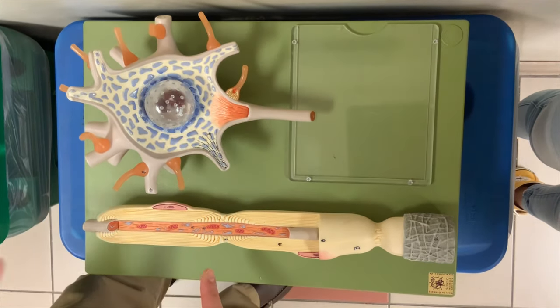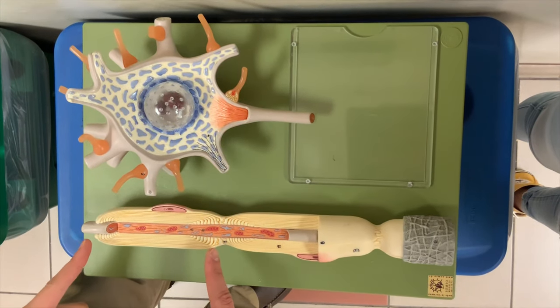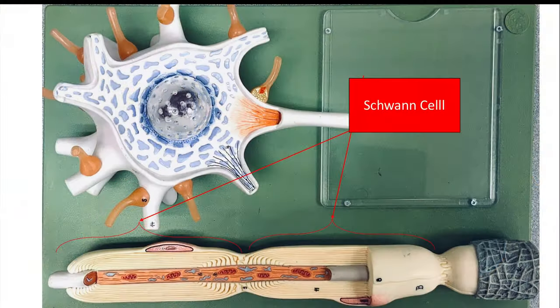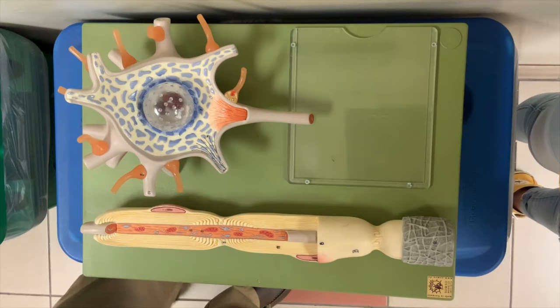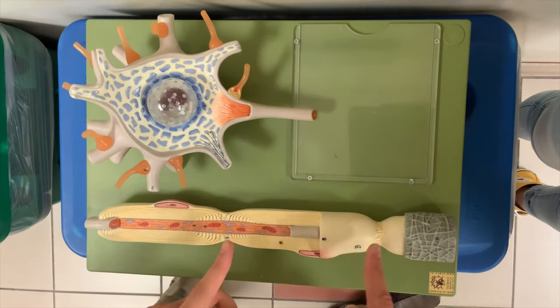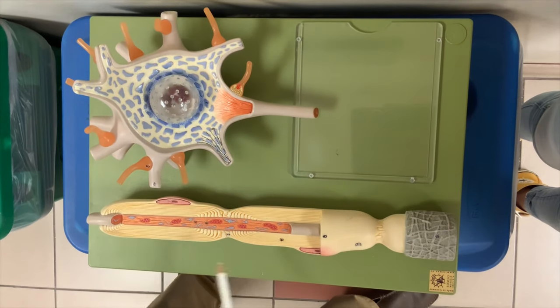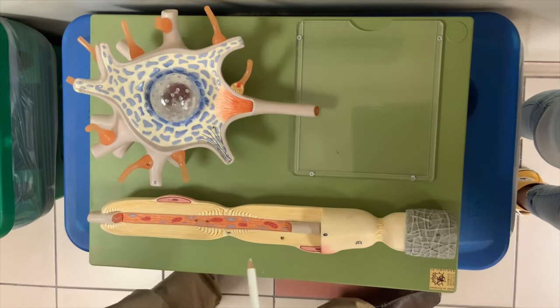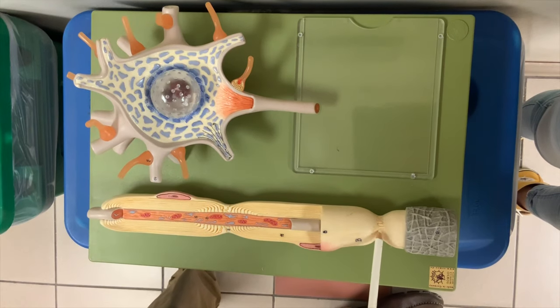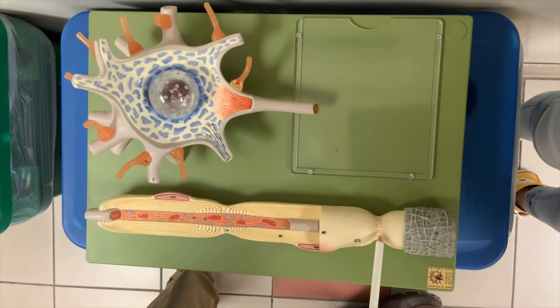These structures around here are called Schwann cells. These are Schwann cells, and each Schwann cell is divided by a node of Ranvier. You can see that node of Ranvier over here.